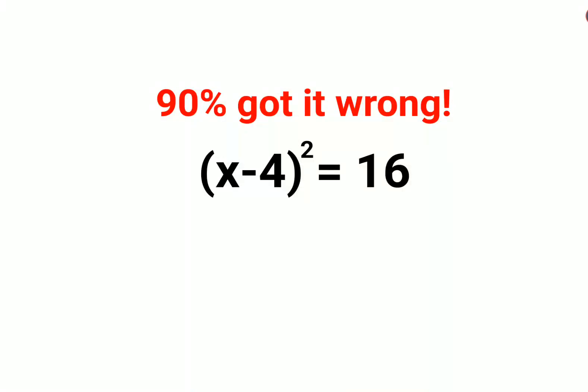Welcome everyone. Today we are going to understand how to solve this kind of problem. Here we have x minus 4 the whole raised to 2 equal to 16, or basically x minus 4 the whole square equal to 16. Now let's understand what we do.